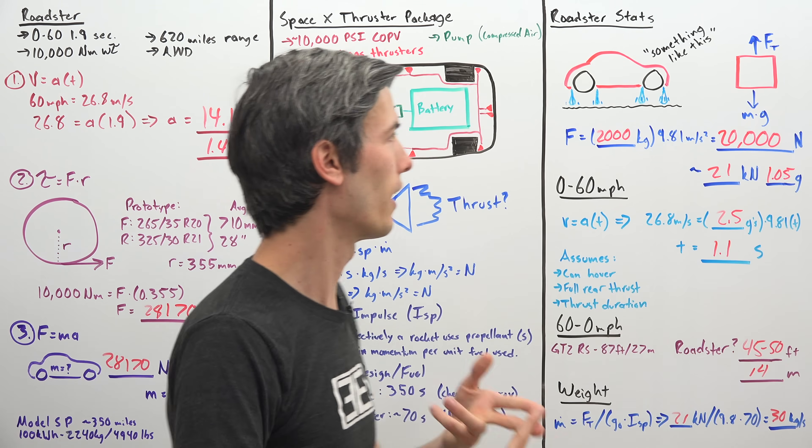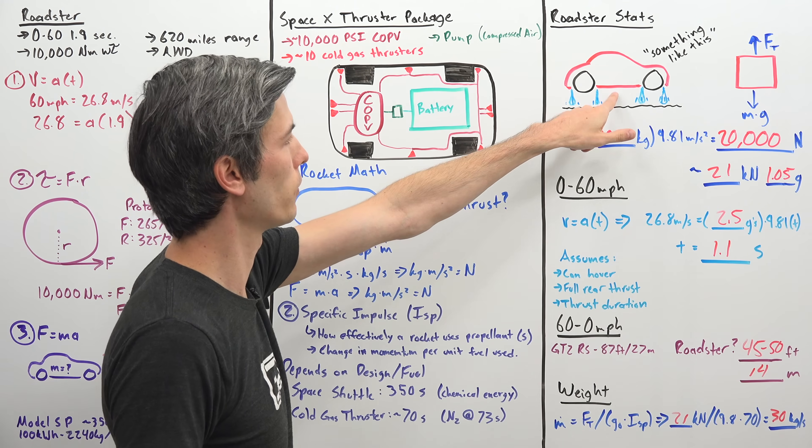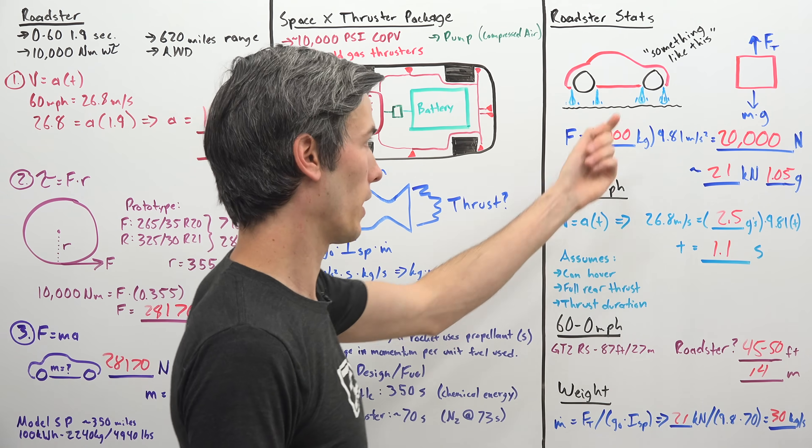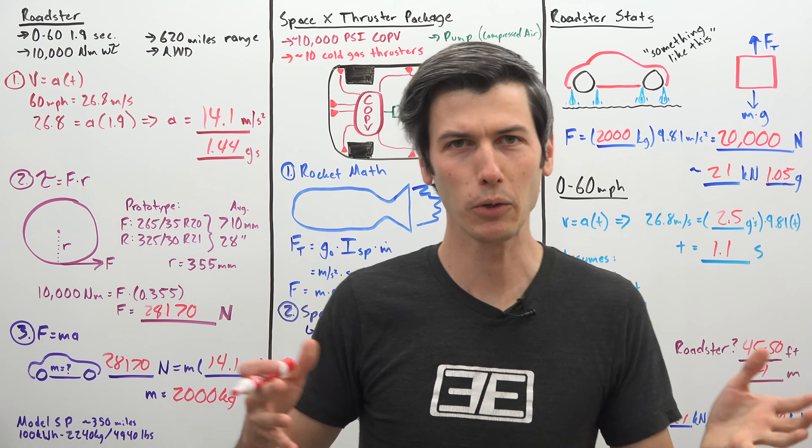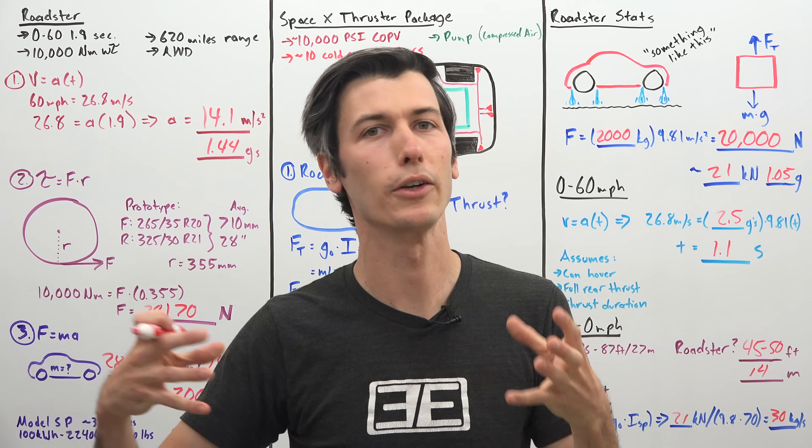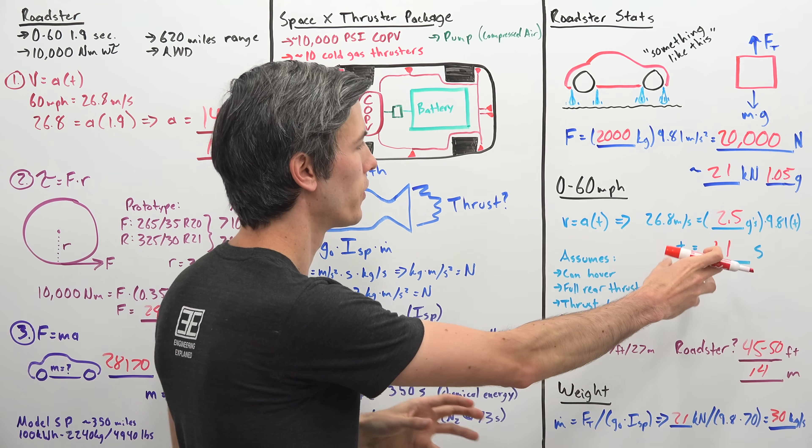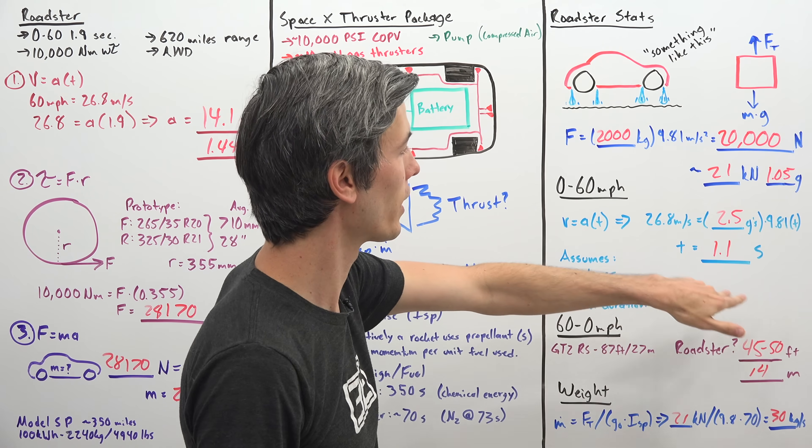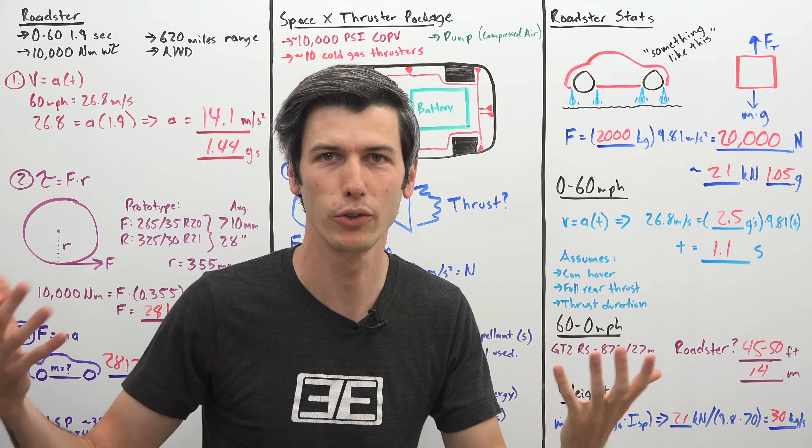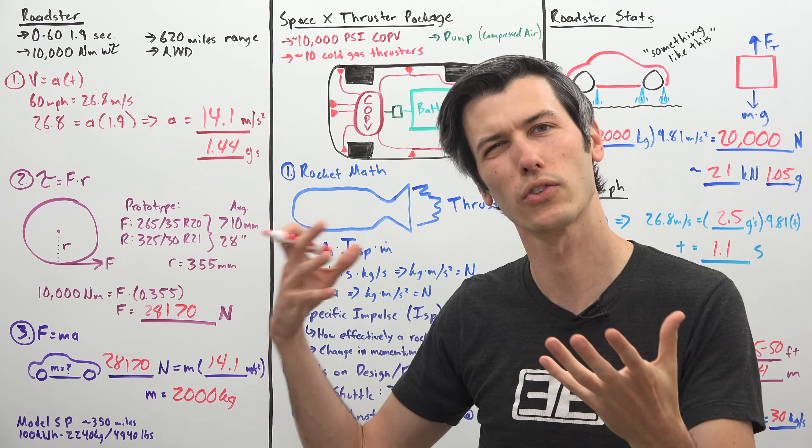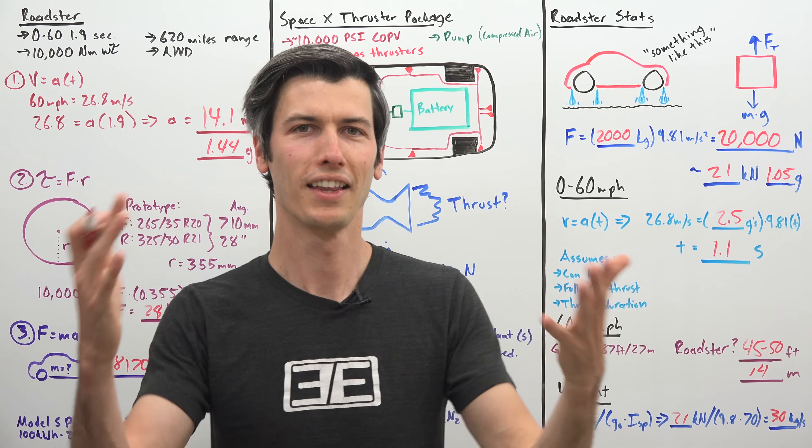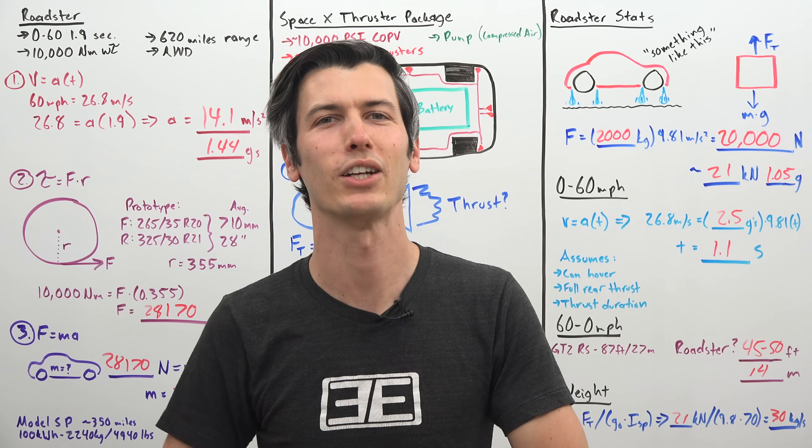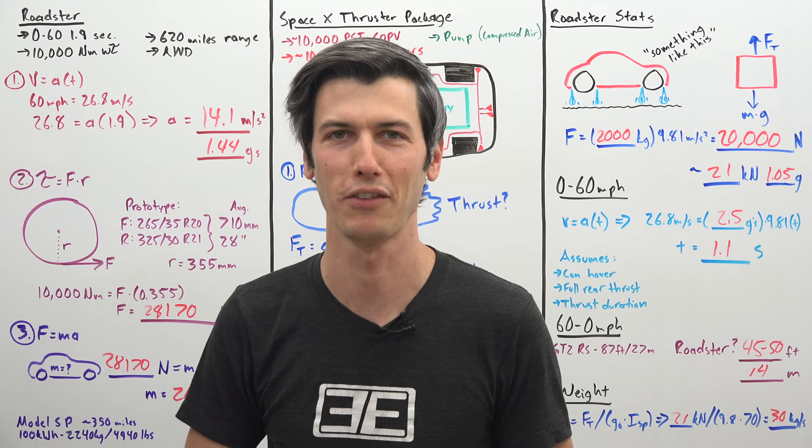But certainly for accelerating, certainly for stopping, and then a fun little floating party trick maybe for like 1 or 2 seconds, it may be possible. Either way, very cool stuff. And very cool how rockets can allow you to skip over the boundaries set by street tires, so you can get 0-60s faster than about 2 seconds, which is where current street tires are really limited at as far as 0-60 times. Thank you all so much for watching. If you have any questions or comments, feel free to leave them below.